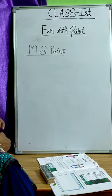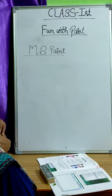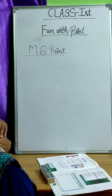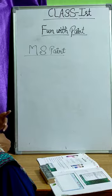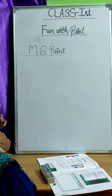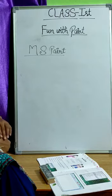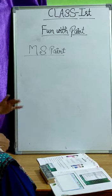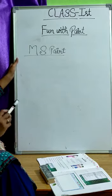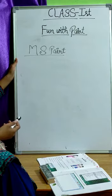First, look at the start button on your computer then click on it. Second step, click on all programs, click on the accessories and click on paint. A paint screen will open and here you can draw and paint.